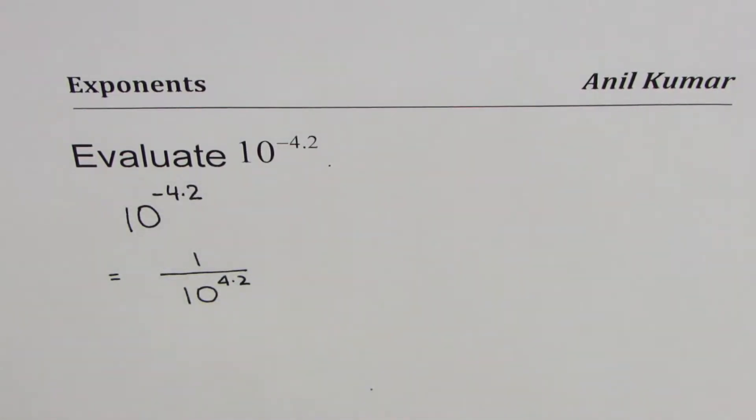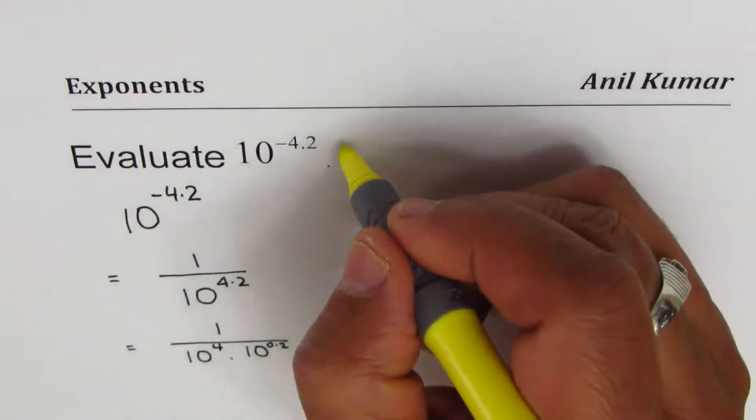4.2 really means that we have this as 1 over 10 to the power of 4, and 0.2 means we can multiply this 10 to the power of 0.2. So you could write this function as I have written - 1 over 10 to the power of 4 times 10 to the power of 0.2.